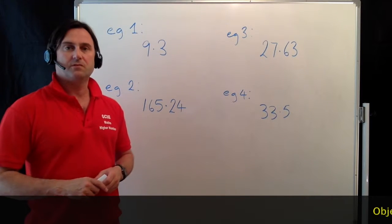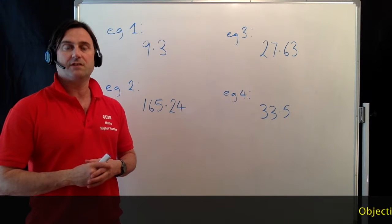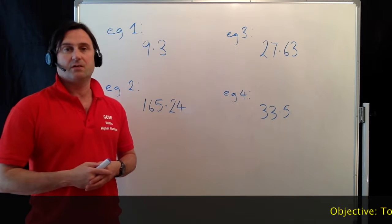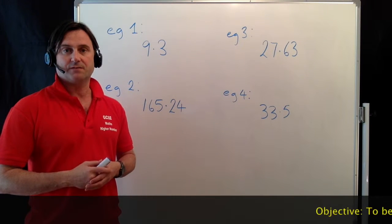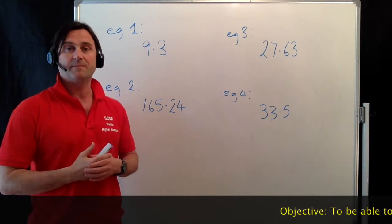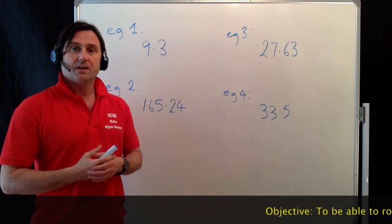Hi, welcome to my tutorial on rounding to the nearest whole number or nearest integer. Now an integer is just a whole number. It can be negative, so 2, 3, 5, 67, minus 4, minus 18 - they're all integers.